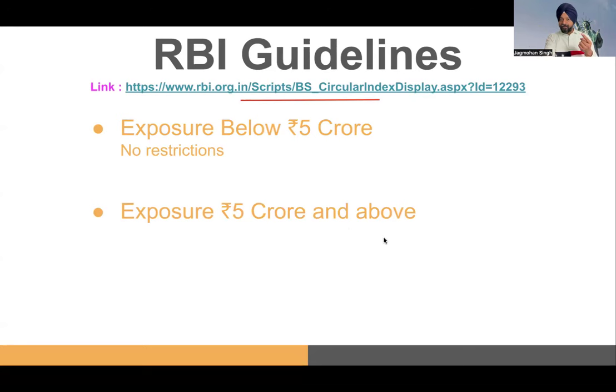Now what if your exposure is above 5 crore? Between 5 crore and 50 crore, the bank can use its discretion — it can allow you to have an account in another bank. The bank with 10% or more exposure has the power to decide whether you can have accounts in other banks. It will mention this in the sanction letter. If it allows, you can open accounts in other banks — but those accounts will not be called current accounts or CC accounts; they will be called collection accounts.